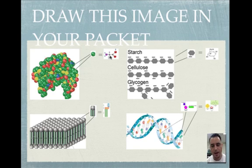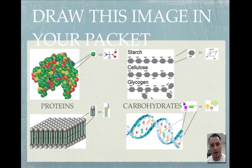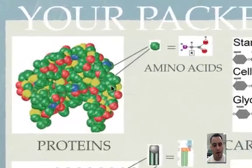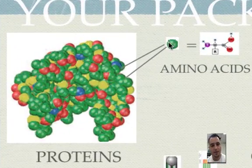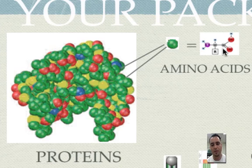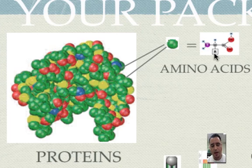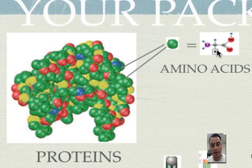Let's go through each of these. We've got our proteins, carbohydrates, lipids, and nucleic acids. The monomers of proteins are amino acids. We see them either as a sphere or in a chemical formula that has an amine group, an amino group, a carboxyl group, an R group, and a hydrogen. The R group is the one that's different — all the others are constant — and there are 20 different forms of R.